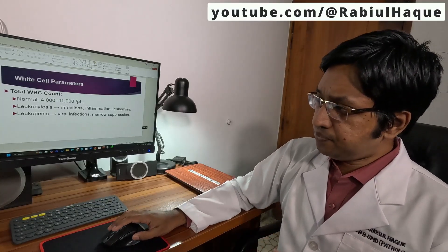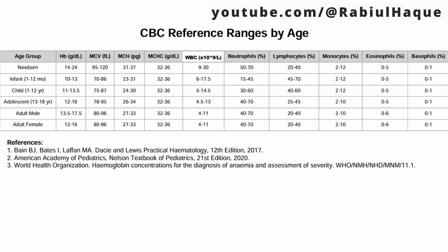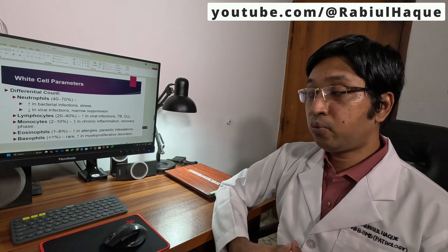When WBC count is less than normal, it is known as leukopenia; causes include bone marrow suppression and viral infection. The differential count is very important. In adults, neutrophils are the dominant white blood cell population, with a normal range of 40 to 70%. The differential count varies according to age — it is different in neonates, children, adolescents, and adults. Elevated neutrophils can indicate bacterial infection, stress, or sepsis; decreased neutrophils can be due to bone marrow suppression or viral infections.